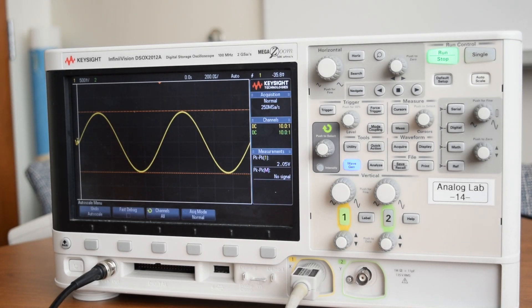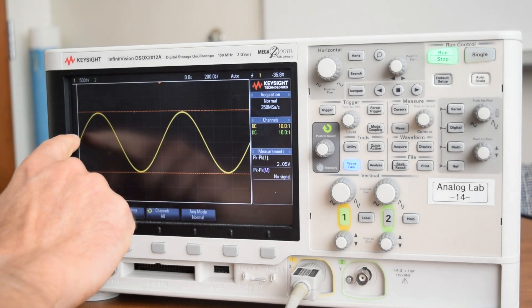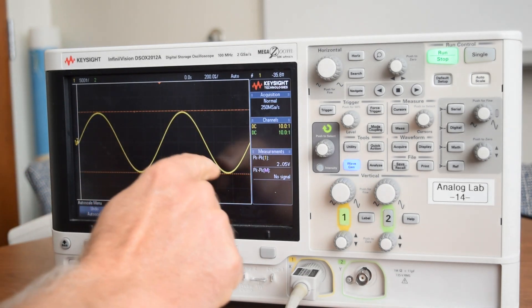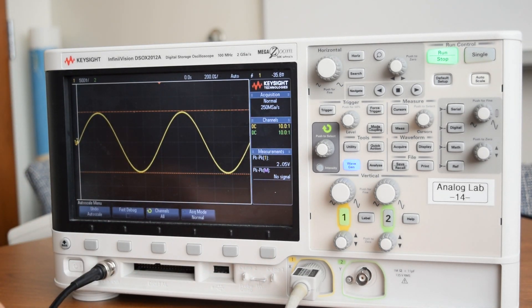This video is going to describe how to use the FFT on the oscilloscope. First of all, here is a signal that we have on the oscilloscope in the time domain. It has a peak-to-peak value of about 2 volts, so this means it is a signal with an amplitude, a sine wave with an amplitude of 1 volt.